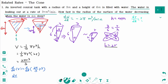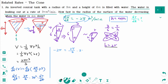Now plug in all the information. Differentiating, dV/dt equals 2π/3 times 3r² times dr/dt. When h equals 4 meters, 4 equals 2r, so r equals 2. Substituting: minus 2π equals (2π/3) times 3 times 2² times dr/dt. After cancellation, minus 1 equals 4 times dr/dt. So dr/dt equals minus 1/4 meter per minute.